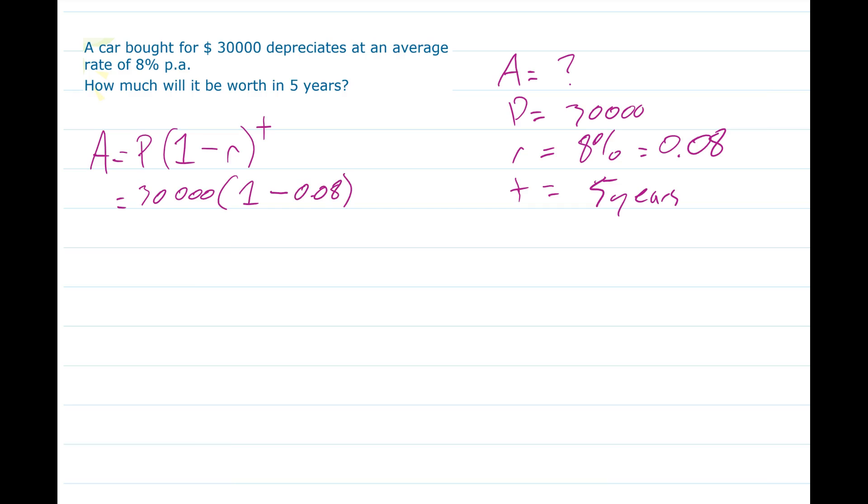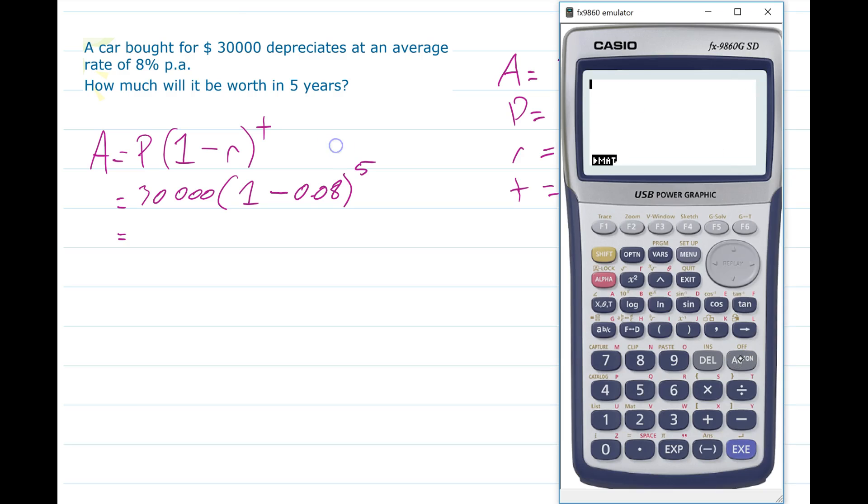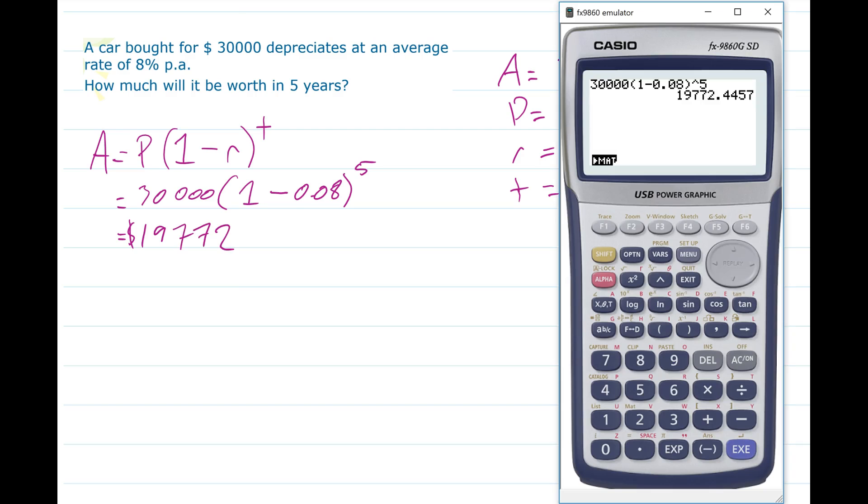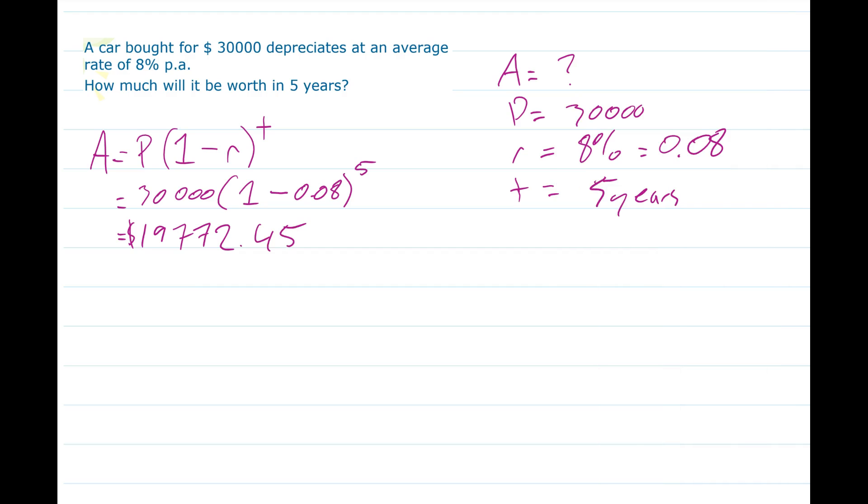We're going to plug it into our calculator: 30,000 times 1 take 0.08 to the 5 is $19,772.45. Therefore the car will be worth...